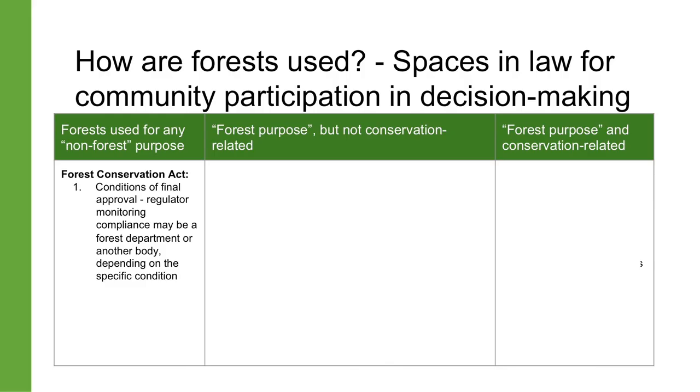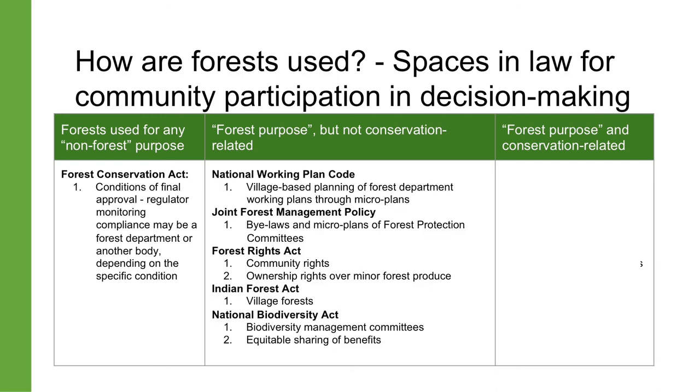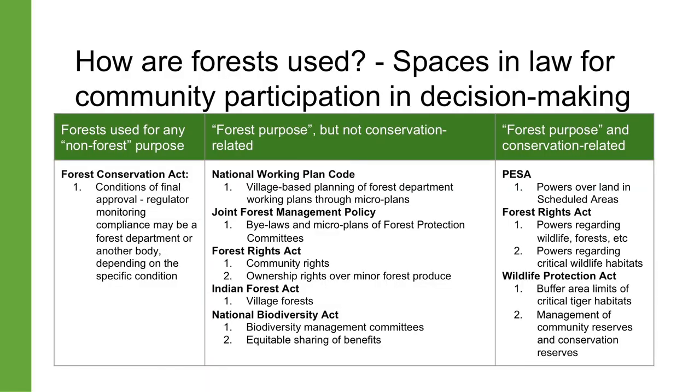And with that, we come to the end of this lecture on how local communities can participate in the management of forests and forest resources. We looked at three different scenarios. In the first case, we learned how communities can monitor compliance with the conditions of forest clearance after forest land has been diverted for a non-forest purpose. In the second case, we learned how communities can use their rights and powers to participate in the management of forest areas not specifically earmarked for conservation — using JFM privileges, rights to own and manage minor forest produce, and rights to participate in the governance of biological resources. In the third case, we learned how communities can participate in the management of conservation spaces through the general powers of Gram Sabhas and through the committees that manage community reserves and conservation reserves. Thank you for watching.